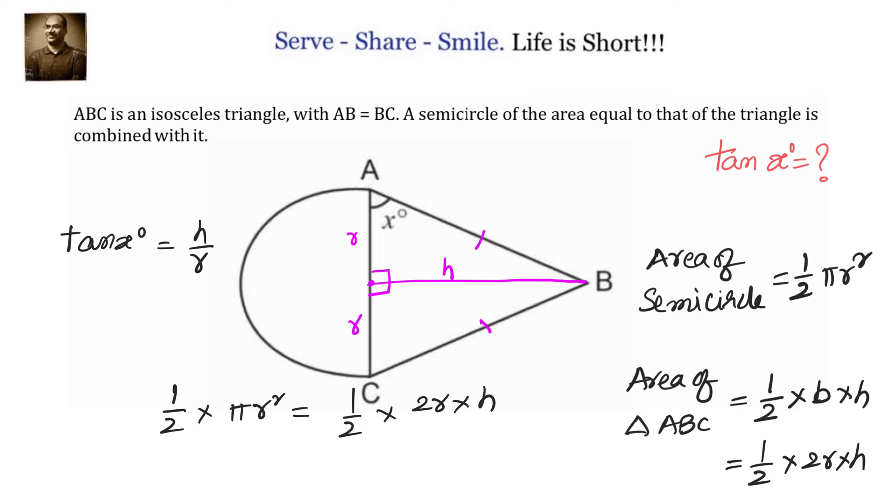We have half pi r squared equals half into 2r into h. Equating both the areas and simplifying, we will get h by r equals pi by 2. But we know tan x is h by r, and h by r is pi by 2. Combining both, we can say that tan x equals pi by 2.